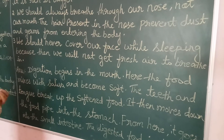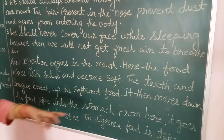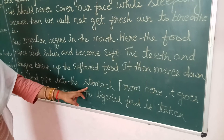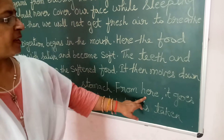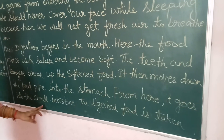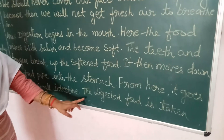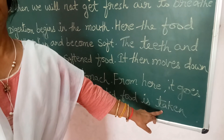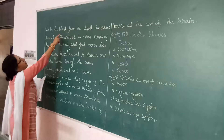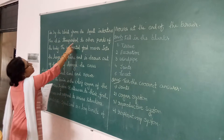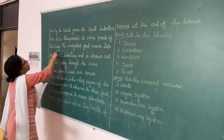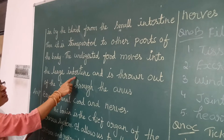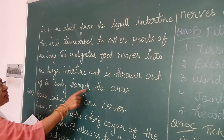When we take the softened food, it then moves down the food pipe into the stomach. From here, it goes to the small intestine. The digested food is taken from the small intestine and transported to other parts of the body. The remaining food moves into the large intestine, and it is thrown out of the body.